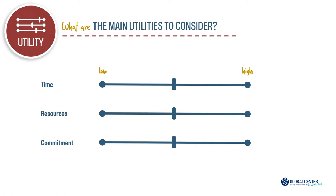When we think about utility, there are three main areas to focus on. One is time — how many actual days or hours does it take to do all the things we need to do in measuring children's learning and development? The second is resources — what capacity, logistics, and operations need to be in place for us to collect data appropriately and use it?